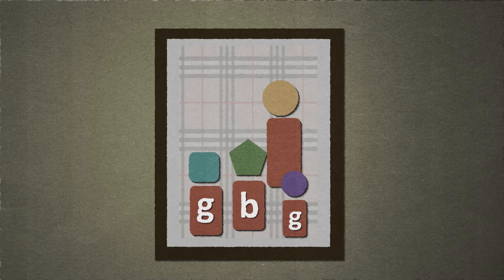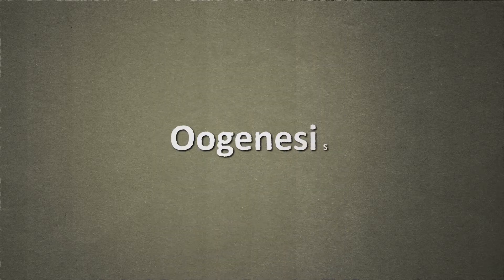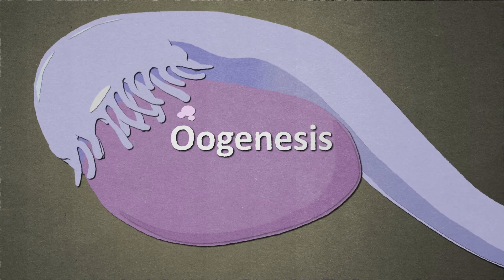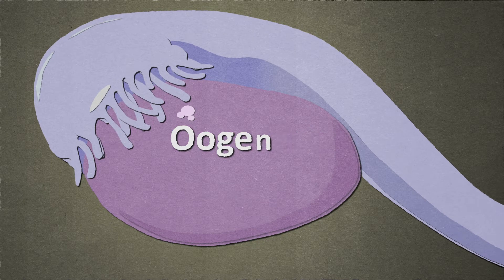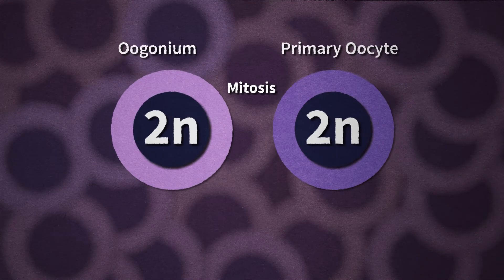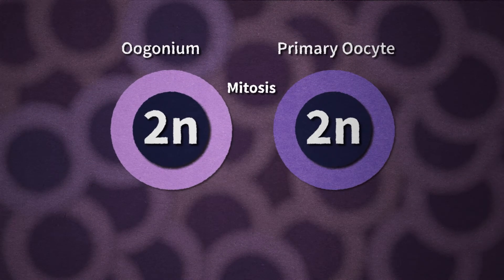To answer questions like these, we have to know more about how eggs are formed by the process of oogenesis, which occurs in the ovaries of a female. In the ovaries of a female, diploid oogonia divide by mitosis to produce more oogonia and specialized primary oocytes, still diploid, that are committed to producing eggs.